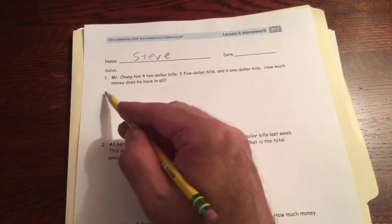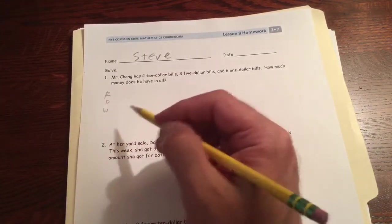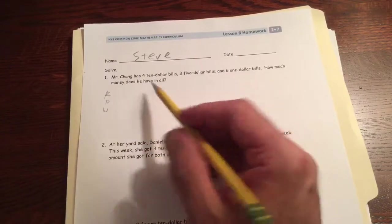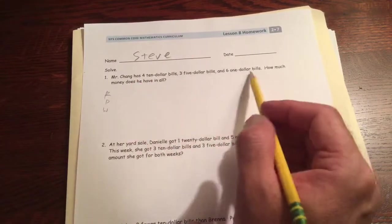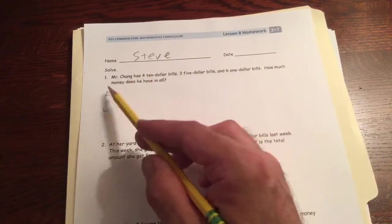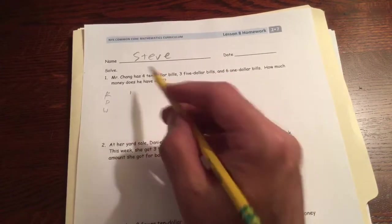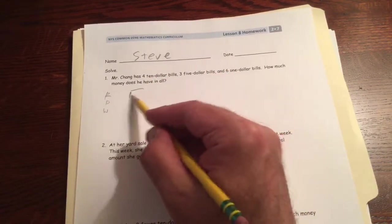These are all word problems, so we're going to draw pictures for them. RDW, read first. We just read that we're going to figure out how much he has in all. We're going to end up counting all this or adding it. So let's just draw the picture.